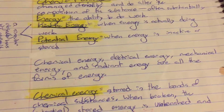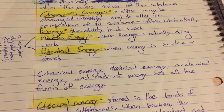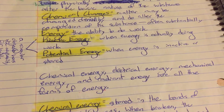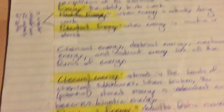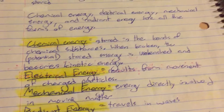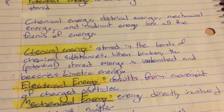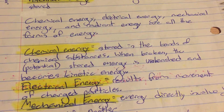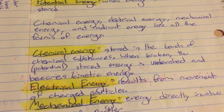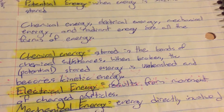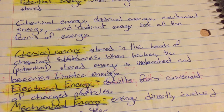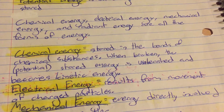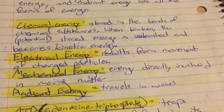Chemical energy, electrical energy, mechanical energy, and radiant energy are all the forms of energy. Chemical energy is stored in the bonds of chemical substances. When broken, the potential stored energy is unleashed and becomes kinetic energy.